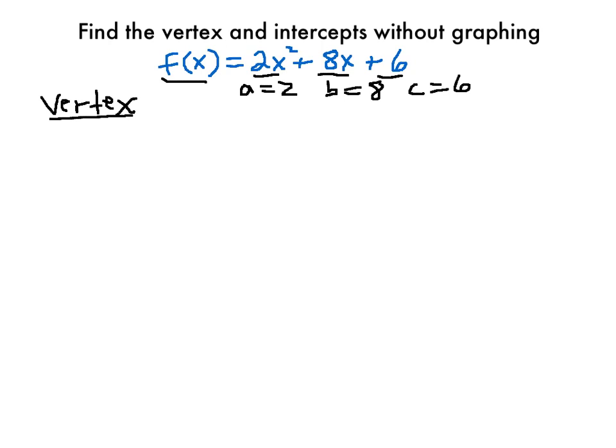And the formula for finding the x-coordinate, the x-coordinate of the vertex, and remember the vertex is going to have two coordinates, an x-coordinate and a y-coordinate, because we're graphing it on a rectangular coordinate system. So to find the x-coordinate, we use the formula, the opposite of b over 2a.